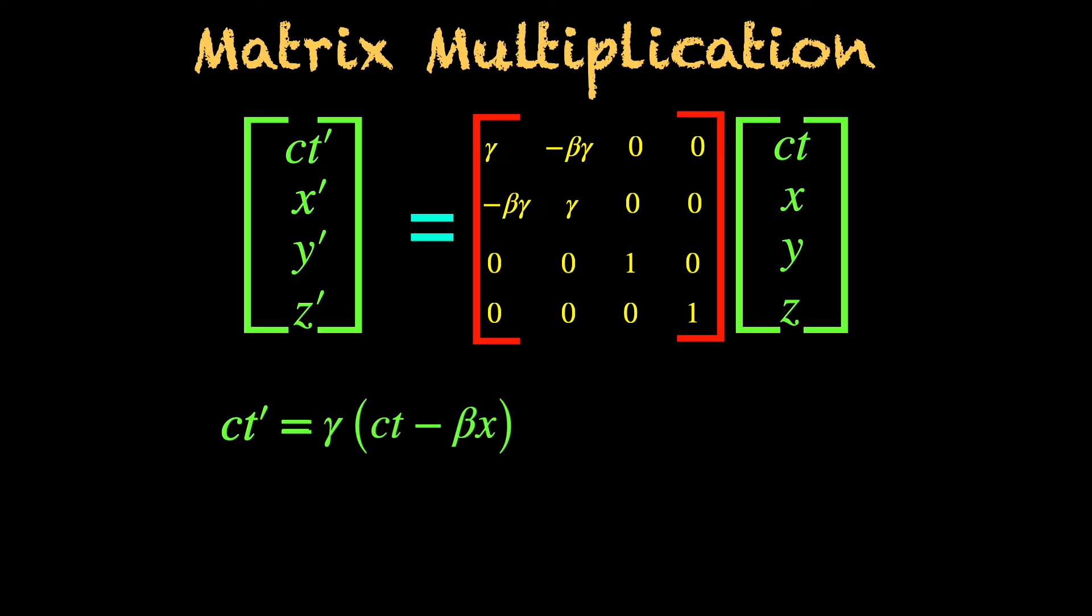Then repeat the same process, but this time using the four entries in the second row of the lambda matrix, this gives the second entry of the column matrix on the left. Again, a little simplification and we have the second of the Lorentz transformation equations, then the third row giving y prime equals y and fourth row giving z prime equals z.